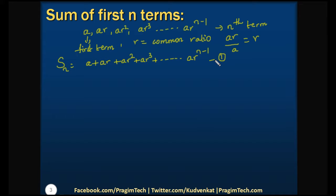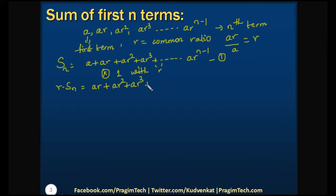Now in order to find the value of Sn, let us multiply Equation 1 by R, the common ratio. Multiplying Equation 1 by R, the resulting series is: R into Sn equals A multiplied by R, which is AR, plus AR into R which is AR squared, plus AR cubed, and so on, up to AR to the power of n-1 multiplied by R, giving us AR to the power of n. Let us name this as Equation 2.